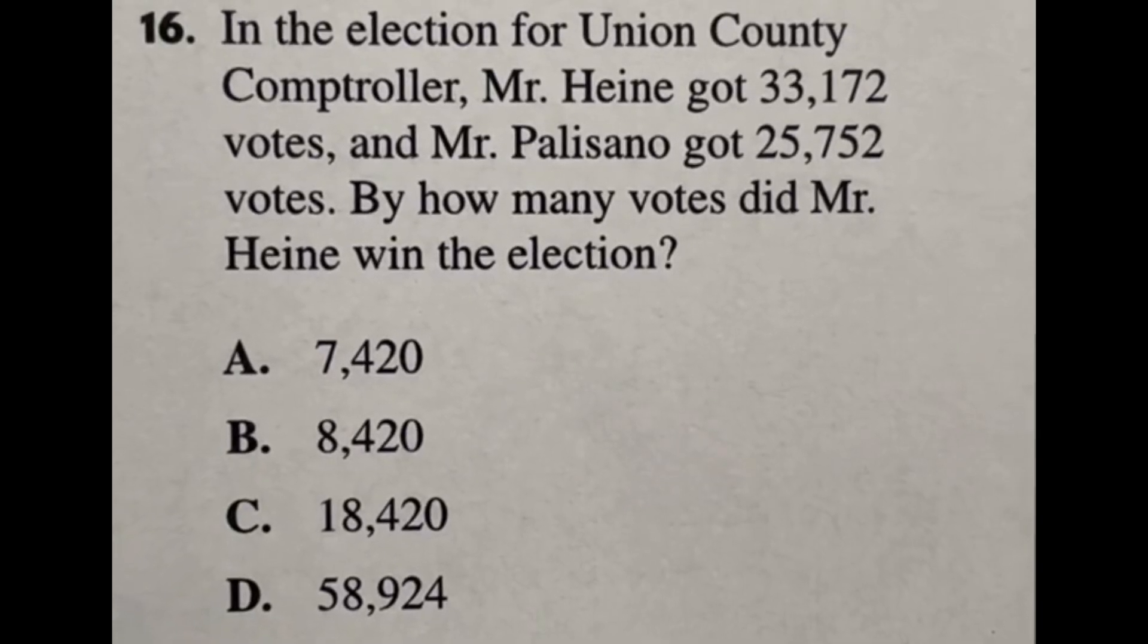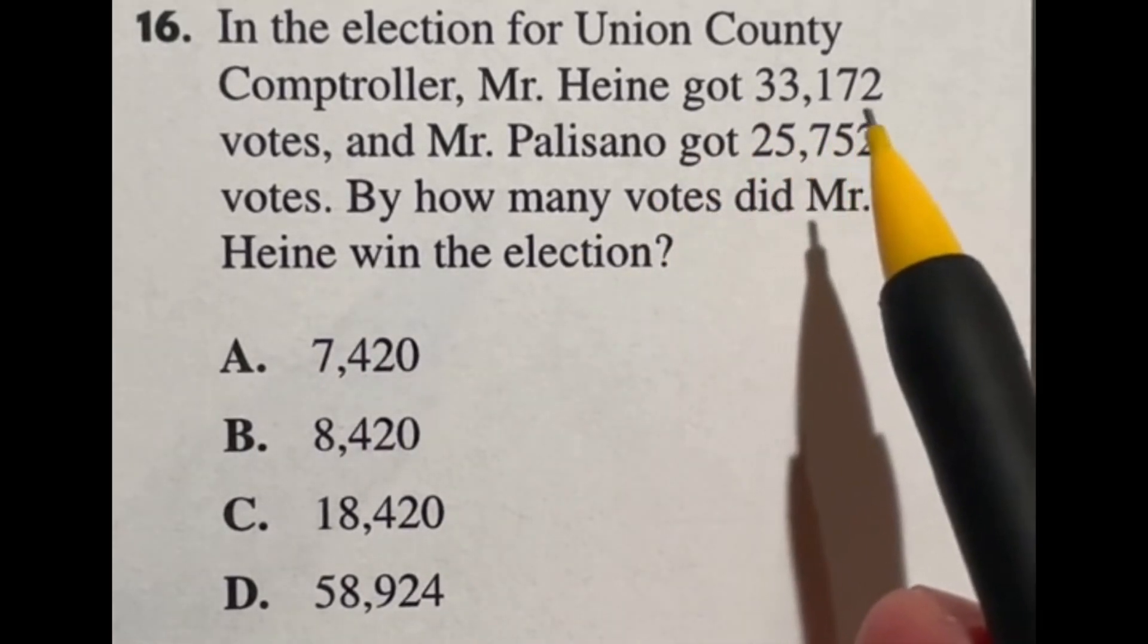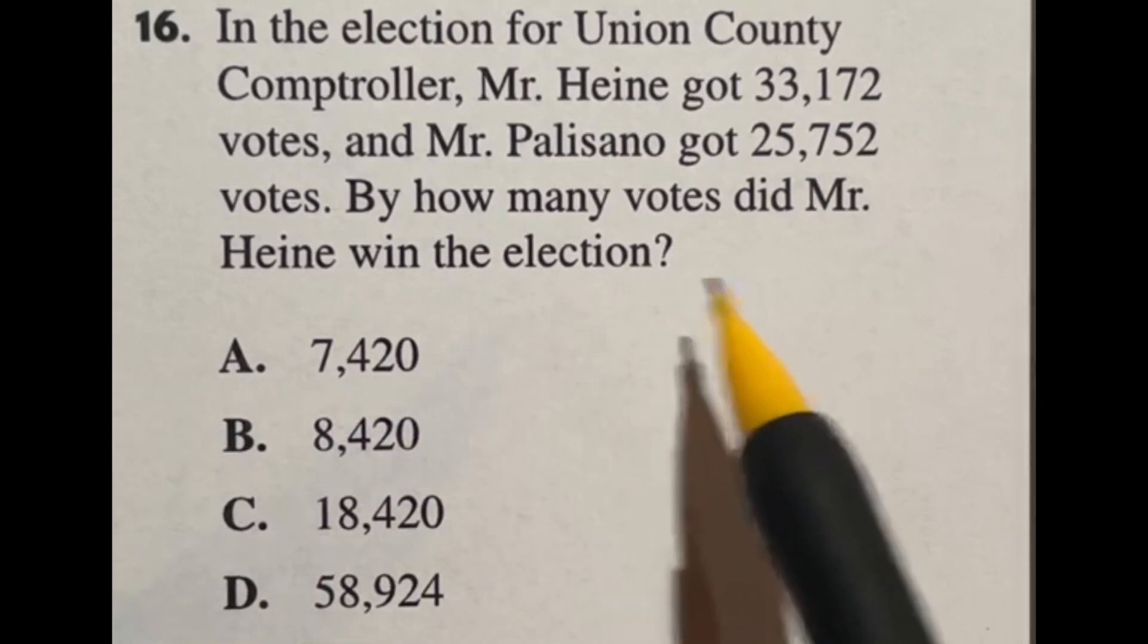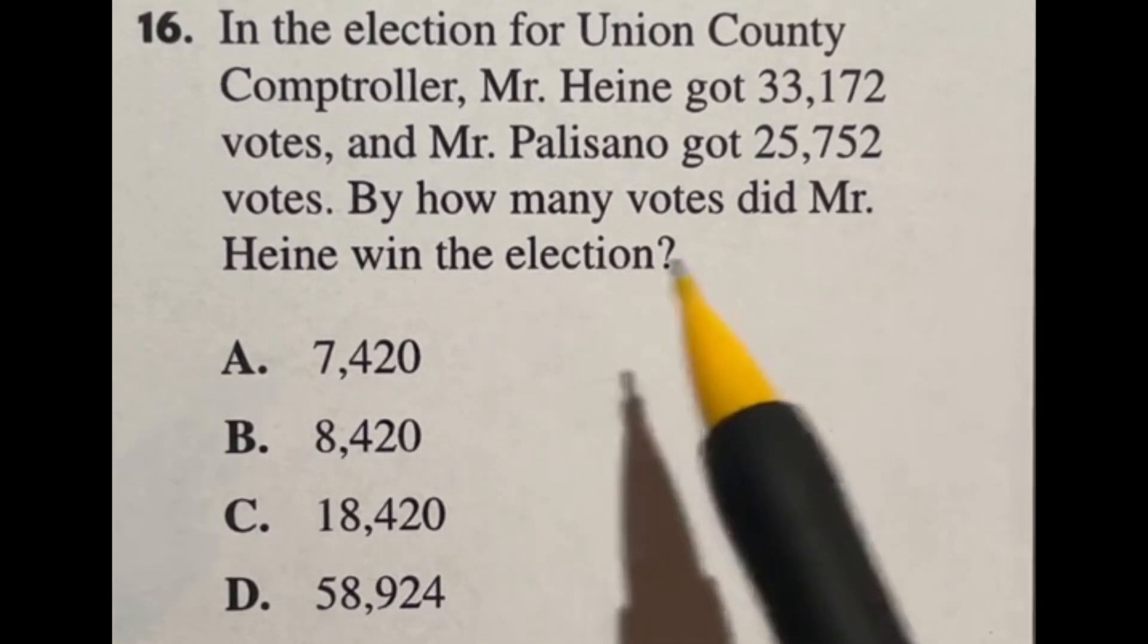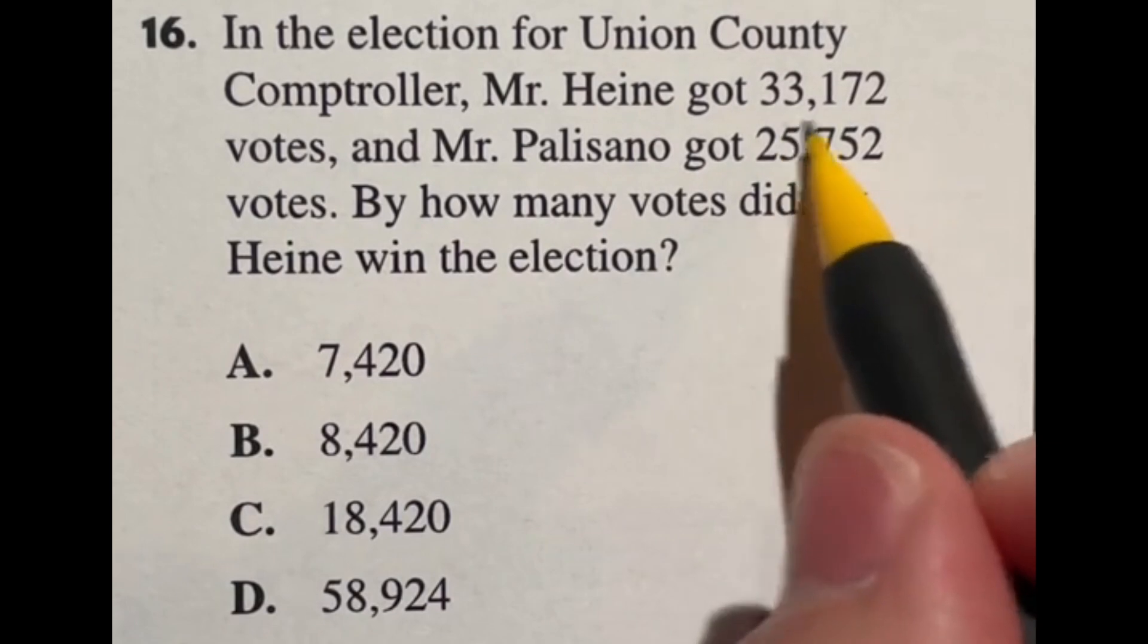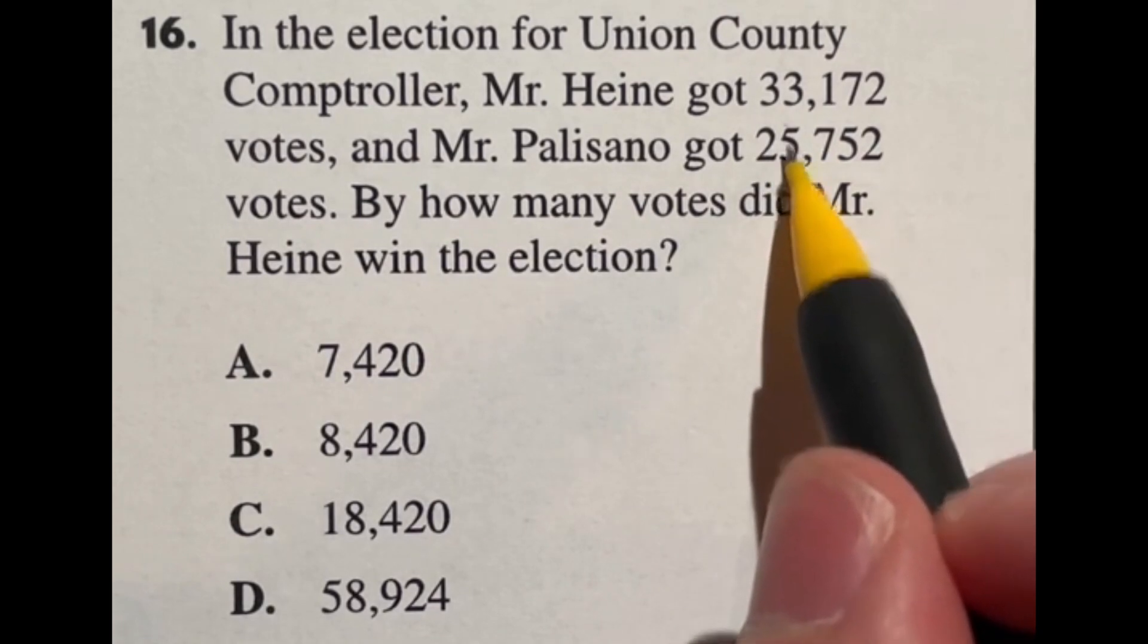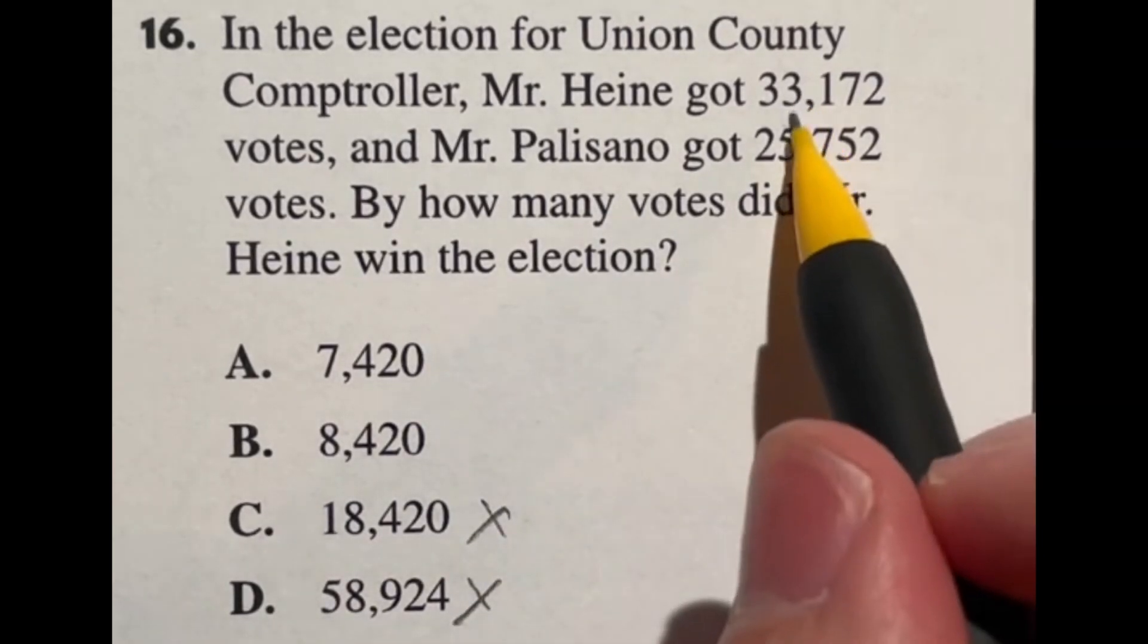For number 16 it says in the election for Union County Comptroller, Mr. Hine got 33,172 votes and Mr. Palisano got 25,752 votes. By how many votes did Mr. Hine win the election? So in this case we're really just looking at a subtraction here. If I want to know how many more votes one had than the other, then we're just subtracting. Now right off the bat, is there any way to quickly guess this answer? Well, 33 to 23 would be 10,000 and we don't have 23, we're above that, so instantly C and D is out because we know our answer has to be less than 10,000.